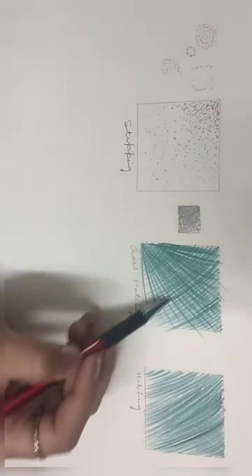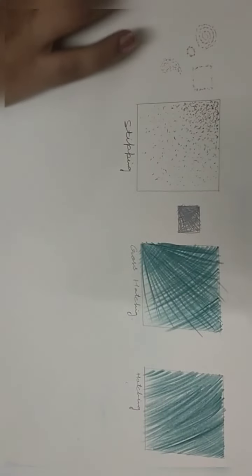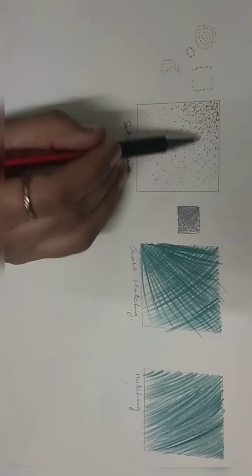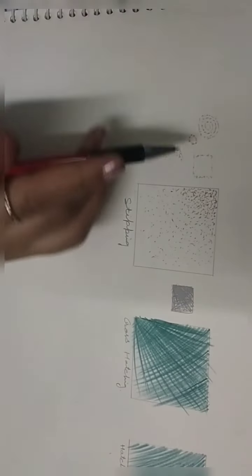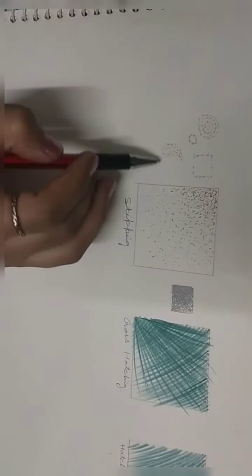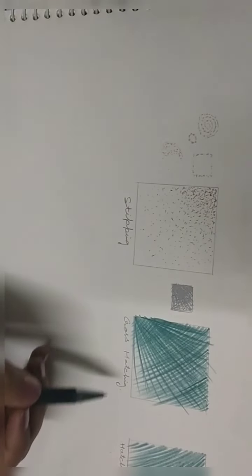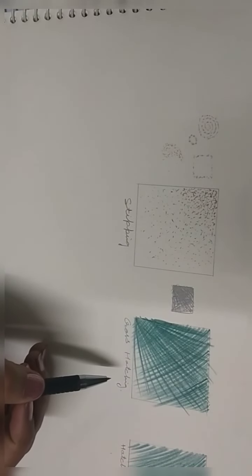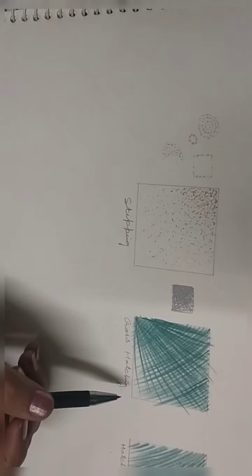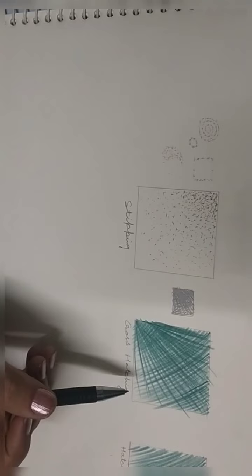You can see in this the lining is straight, and in this cross hatching I have done two directions. In stippling, only point work and different motifs can be created with it. So in the next video we will design more with pencil color like stippling, layering, and brushing effects. Thank you.